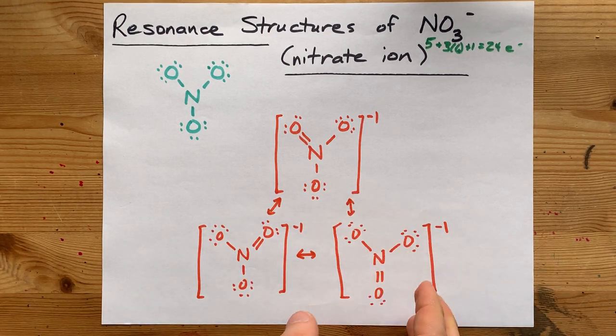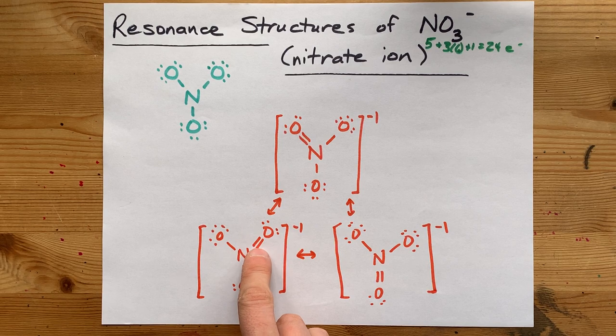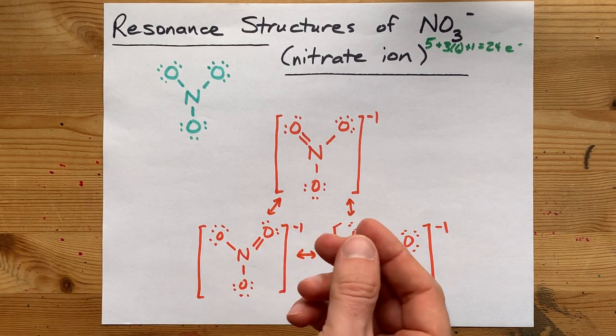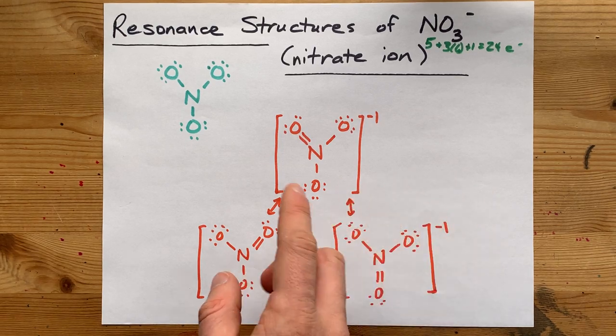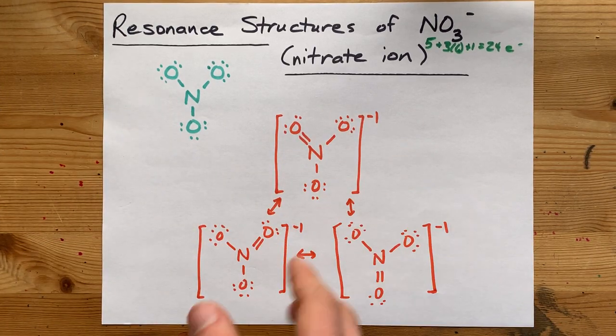The true structure of the nitrate ion does not have single or double bonds. Each of the bonds in nitrate are all the same length, as long as the nitrate isn't bonded with anything like a hydrogen and nitric acid.